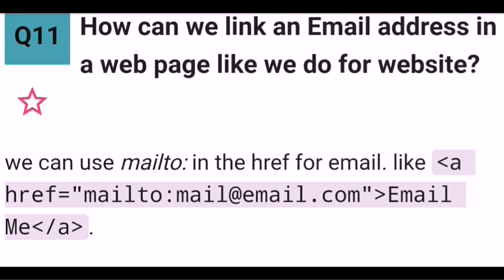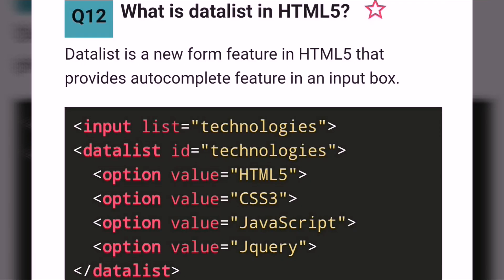How can we link an email address in a webpage like we do for a website? We can use mailto in the hyperlink, for example: anchor tag with href equals mailto:mail@email.com with the text 'Email Me' and a closing anchor tag. What is datalist in HTML5? Datalist is a new form feature in HTML5 that provides autocomplete functionality in an input box.